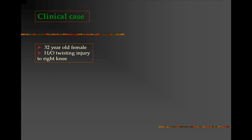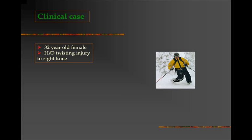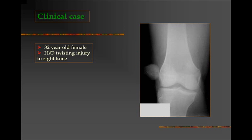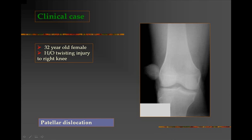Here we have a clinical case of a 32-year-old female patient who sustained a twisting injury to the right knee while skiing. The x-ray of the right knee in AP view shows the femoral shaft and condyles and the tibial condyles, but note that the patella is missing from its normal location and is lying laterally. This is a case of patellar dislocation.